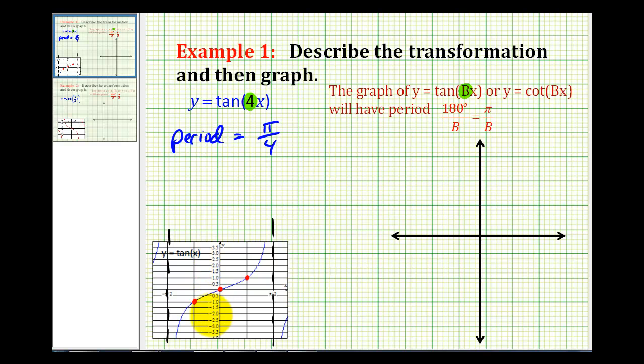And this should be enough information to help us graph y equals tangent four x. And since the period of y equals tangent four x is equal to pi over four radians, we'll plot half of this interval to the right of the y-axis and half to the left, which means we'll go to the right pi over eight units and to the left negative pi over eight units.